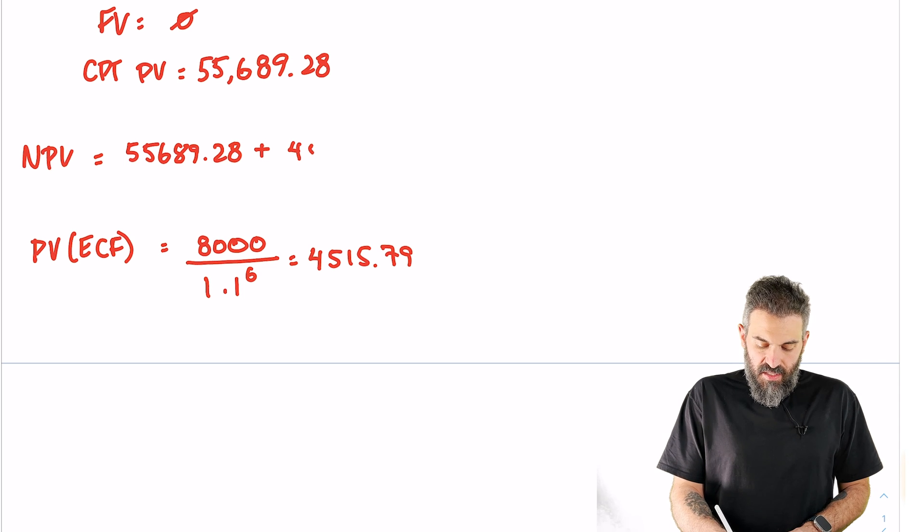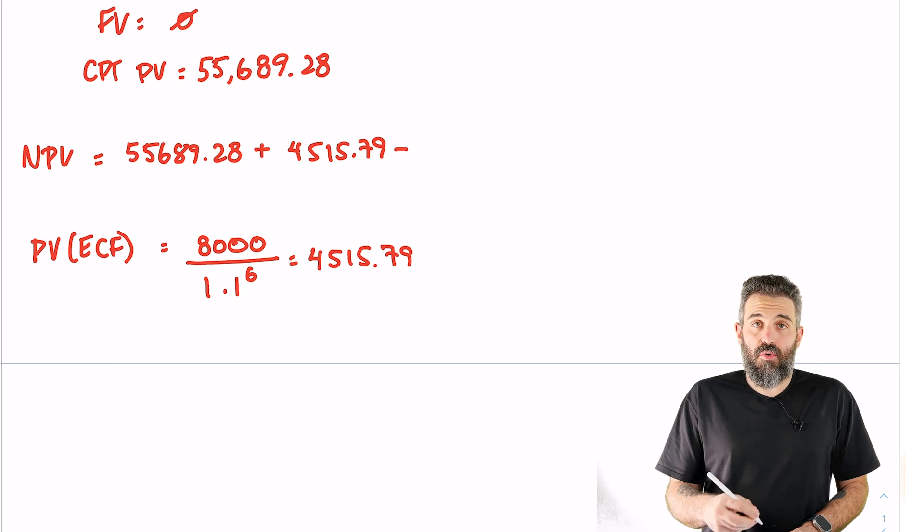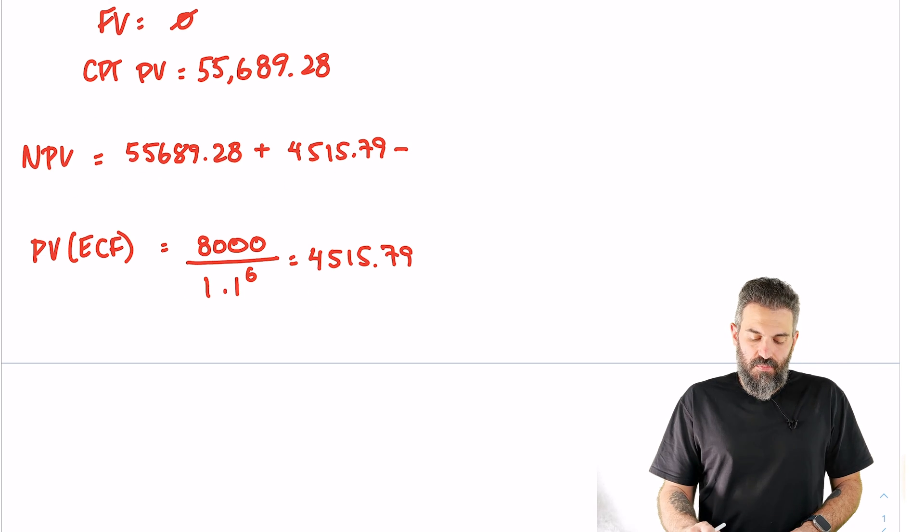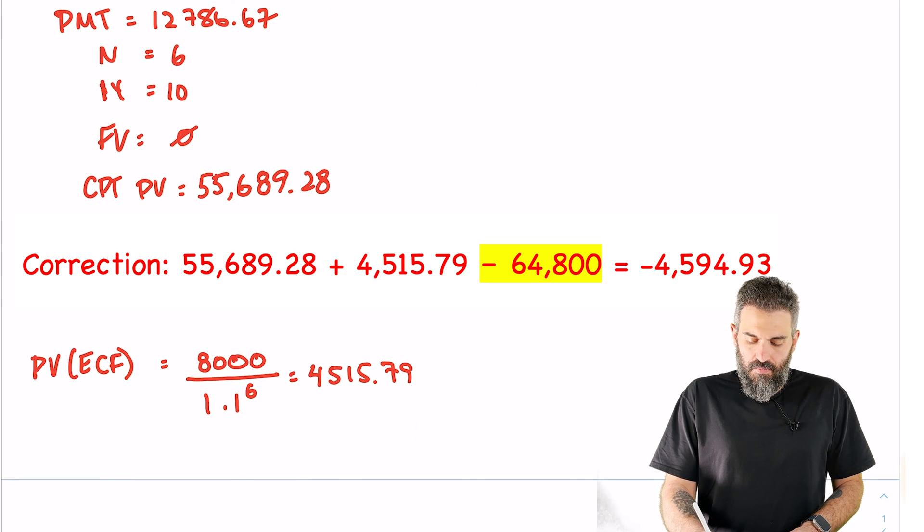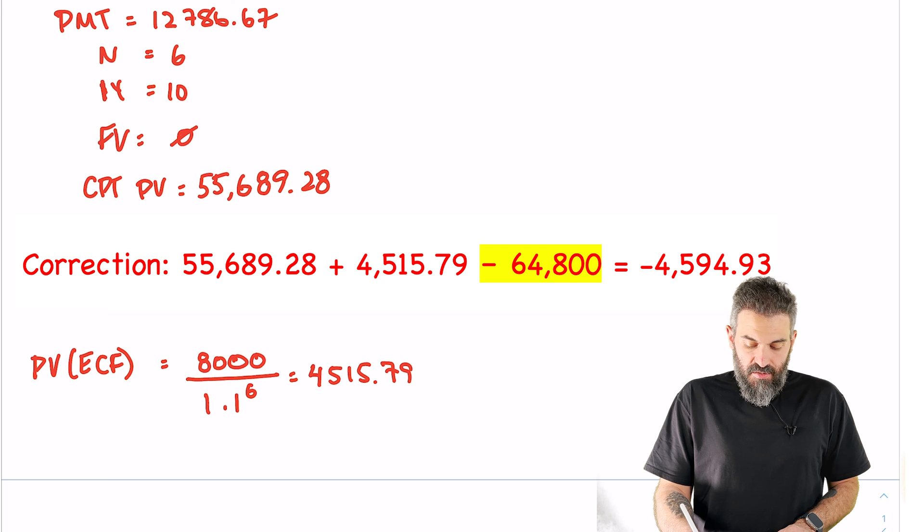So we'll add that into find net present value, and we're going to subtract the initial cash flow, which was $61,800. So we get a net present value here of negative $1,594.93, which means this project is not profitable and therefore should be rejected.